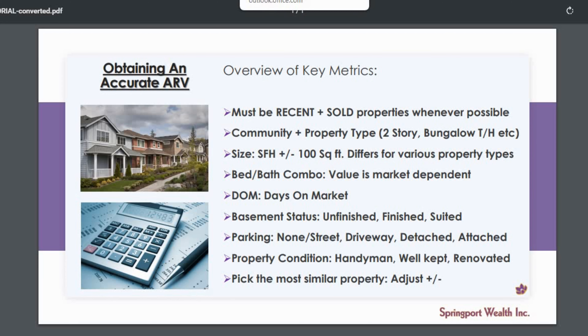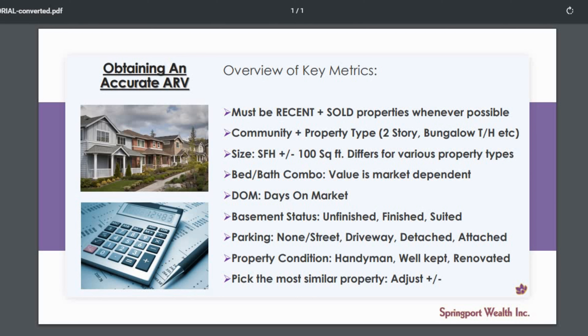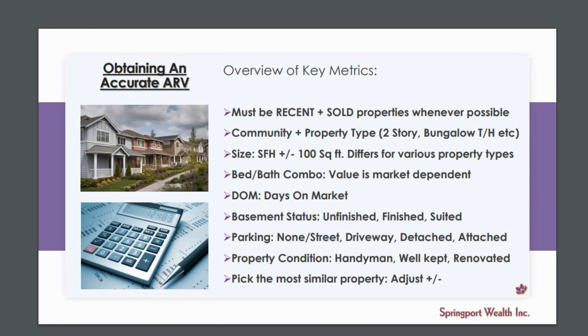So a few key metrics to keep in mind. First, it must be a recent or sold property whenever possible, because markets can, will, and do change. You always want to make sure that you're getting recent and sold comparables. You don't want to get something from a year ago unless it's part of a larger data pool or it's a unique property and you can't get any other data. That's the only time — 99% of the time you want recent and sold data.